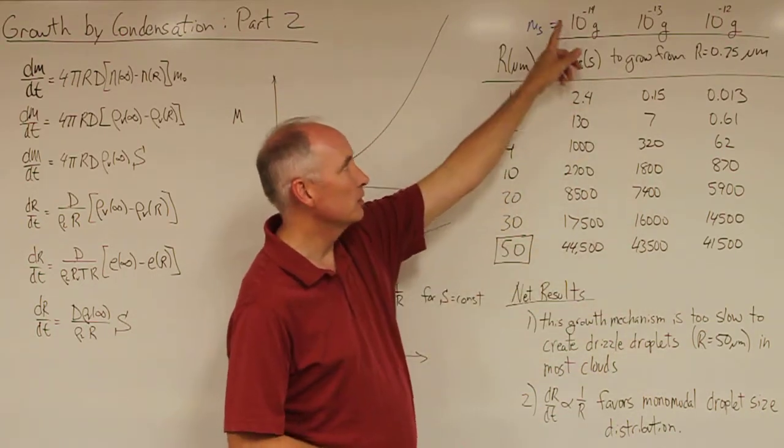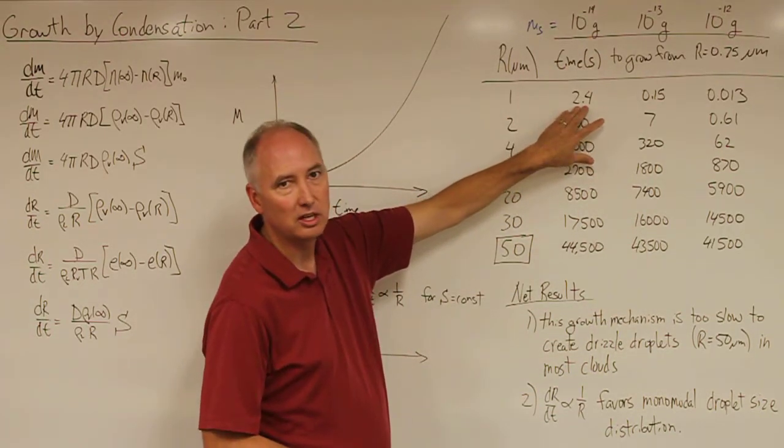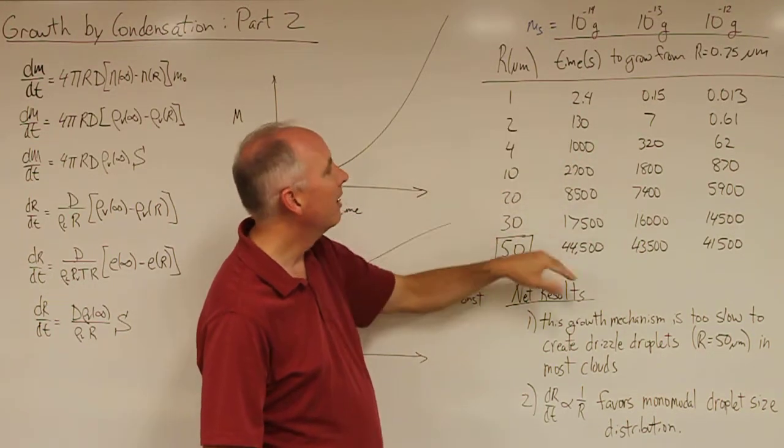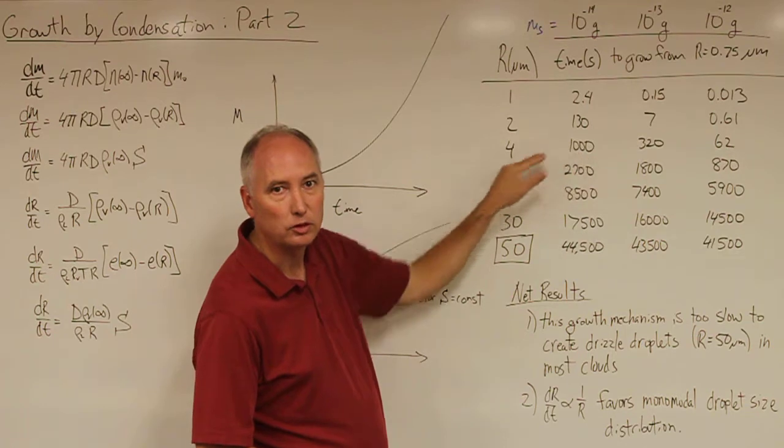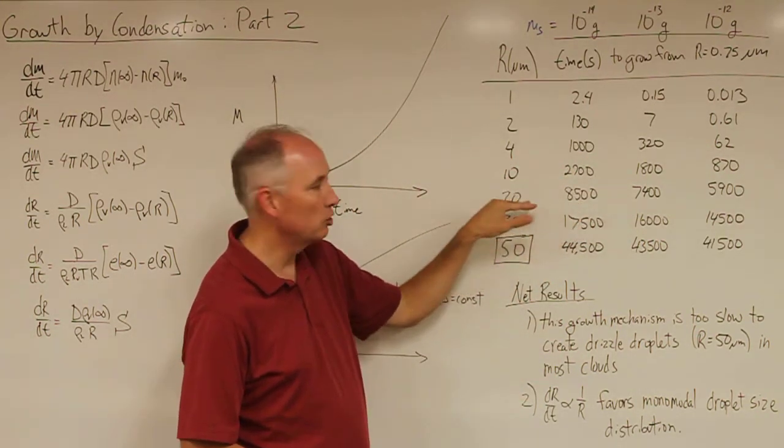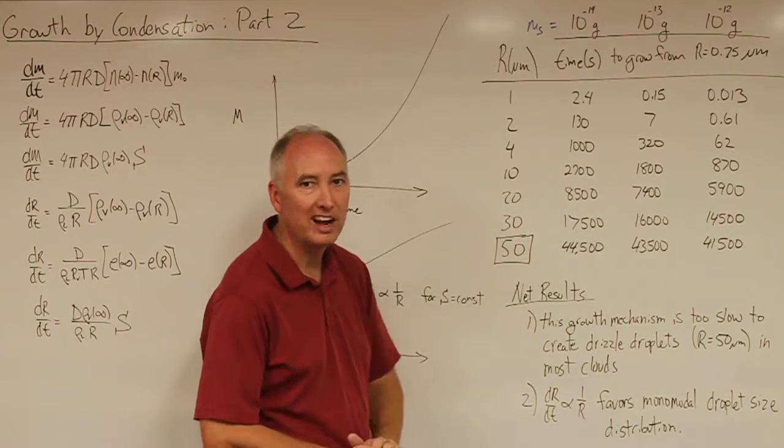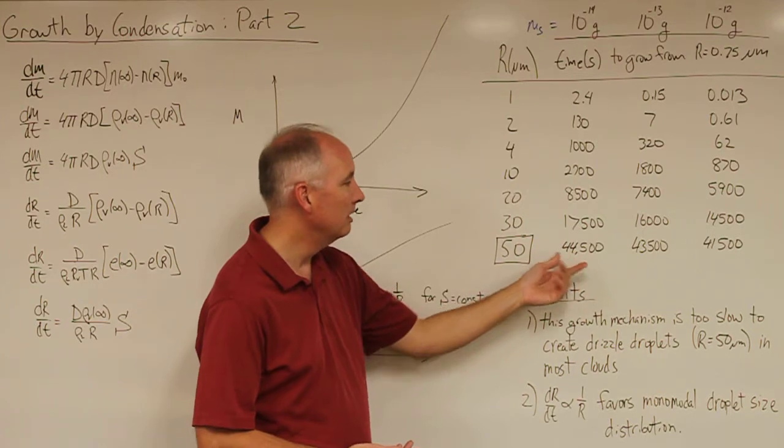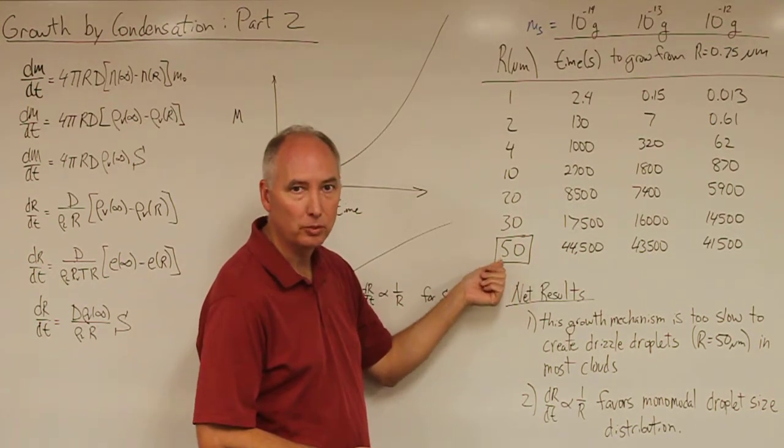So for example, for the smallest particle it only takes about 2.4 seconds for it to reach one micrometer, but it takes a thousand seconds for it to reach four microns, and then 8,500 seconds to reach 20, and a full 44,500 seconds, which is more than 12 hours, to reach 50 micrometers radius.